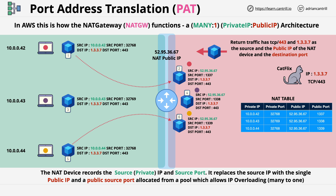For return traffic, if an entry is present in the NAT table, the NAT device translates the public IP and public port — which are the destination IP and port — back to the original private IP, which is 10.0.0.42 (the top laptop), and port 32768, which is the original source port number.